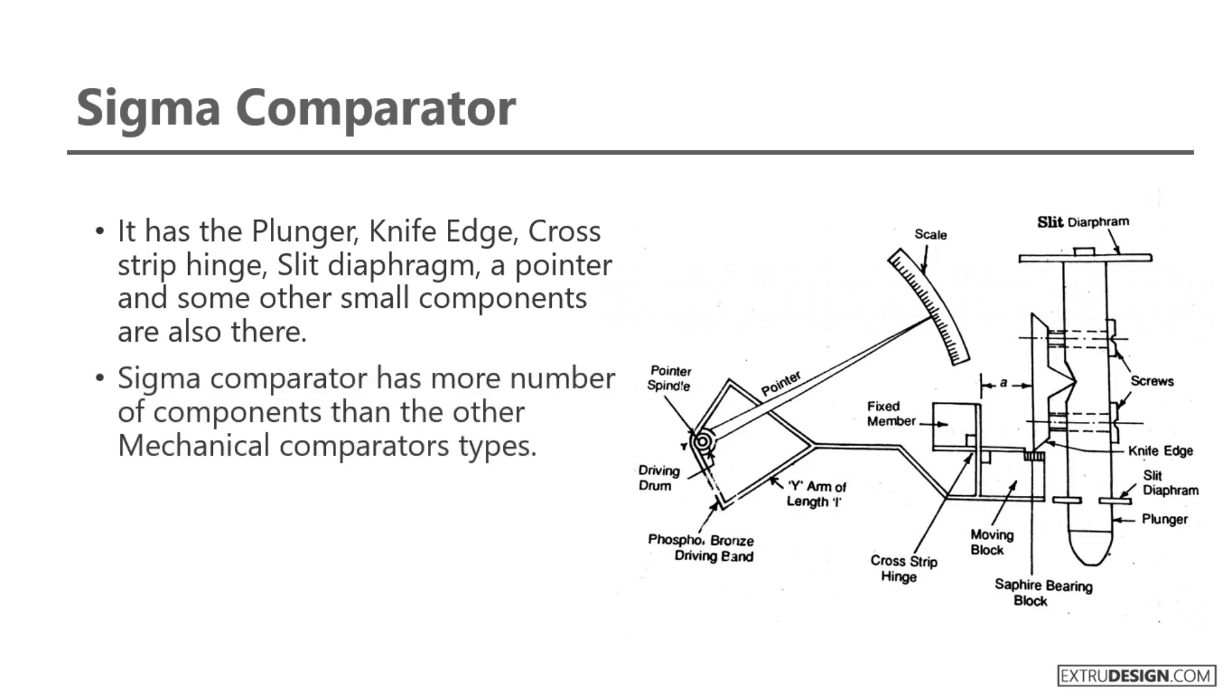Sigma comparator has more number of parts than the other mechanical comparator types. This sigma comparator is also provided with frictionless linear movement, as like reed type mechanical comparator. To know more about the sigma comparator, check the link in the description.